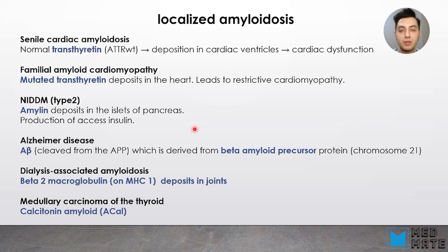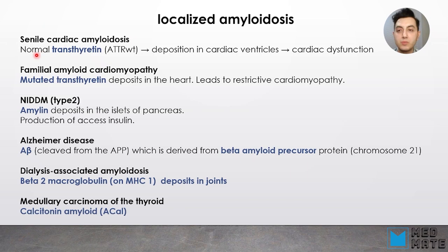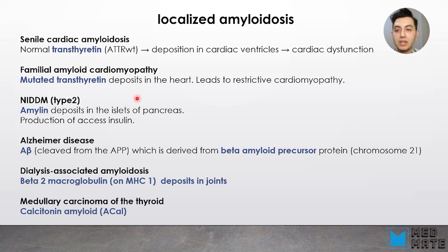Now let's talk about localized amyloidosis. An example is senile cardiac amyloidosis — when we have normal transthyretin deposition in cardiac ventricles, leading to cardiac dysfunction. In familial amyloid cardiomyopathy, we have mutated transthyretin deposition in the heart, leading to restrictive cardiomyopathy. Also, in diabetes type 2, excess production of insulin produces a byproduct called amylin, which gets deposited in the islets of the pancreas.